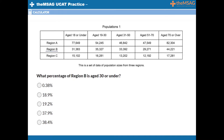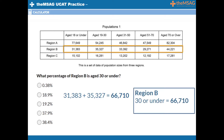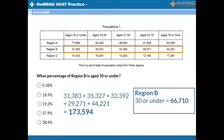To find the percentage of region B who is age 30 or under, you would refer to region B's row and add up the number of people who are aged 18 or under and the number of people who are aged 19 to 30. This gives you 31,383 plus 35,327 plus 33,392 plus 29,271 plus 44,221, which equals 173,594.